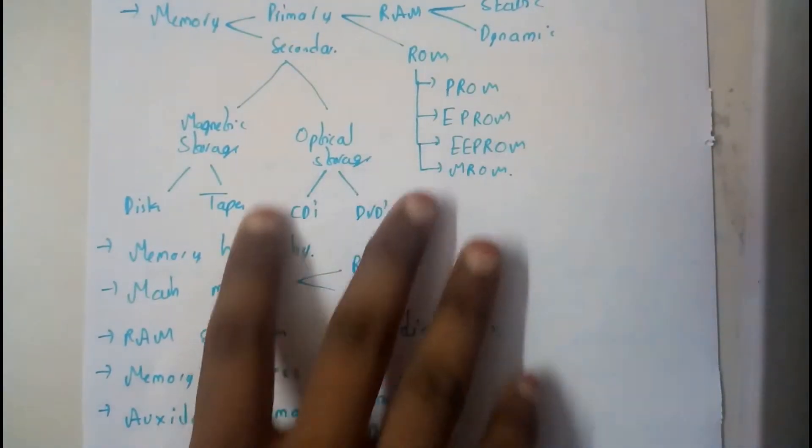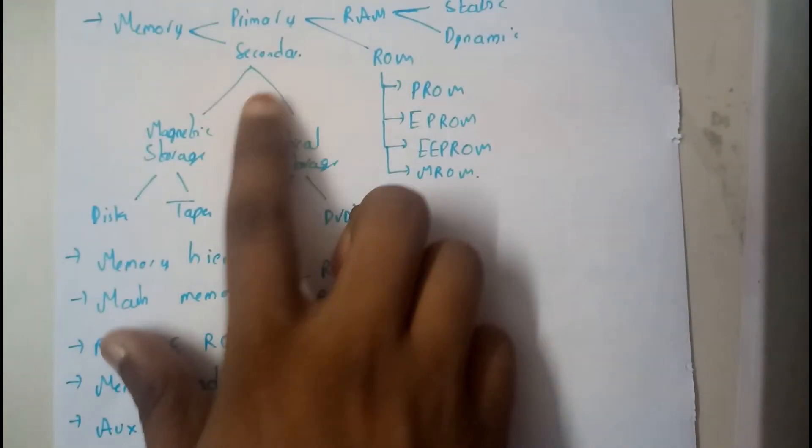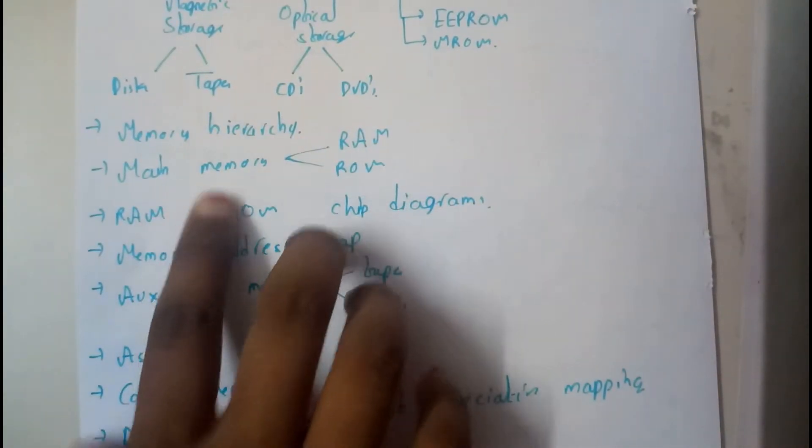We also discussed dynamic RAM types. In secondary storage, we have tapes and discs. We discussed memory hierarchy and the RAM and ROM chip diagrams with explanation.